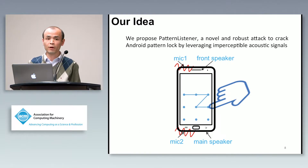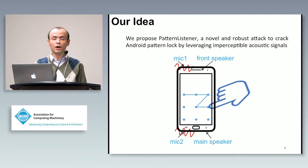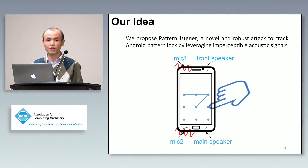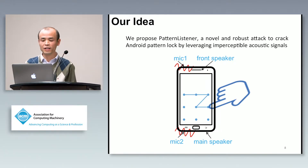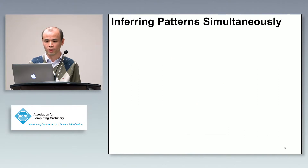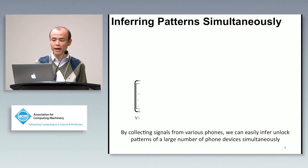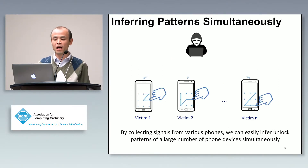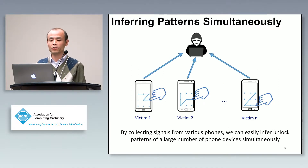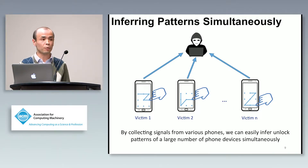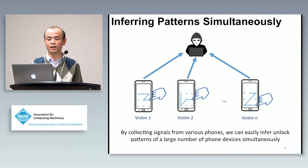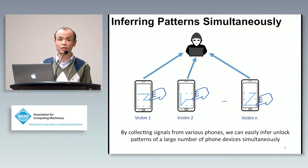Basically, we use a malware to generate the signals and infer the pattern lock by analyzing the signal reflected by the fingertips on the screen. By such an approach, we can collect signals from wireless phones and easily infer unlock patterns of a large number of phones simultaneously.